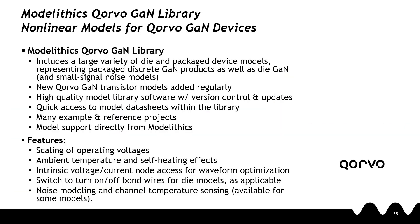The nonlinear model featured in the previous slide is part of our Model Ethics Corvo GAN library. This library is a powerful design tool, including a large variety of die and package device models for Corvo devices. Both package discrete GAN products as well as die GAN products are represented. As with all of our libraries, we're regularly adding new content, version control, and updates with every release. The Model Ethics Corvo GAN library also comes with quick access to model data sheets within the library, as well as many example and reference projects for designers to use. Support for these models comes directly from Model Ethics.